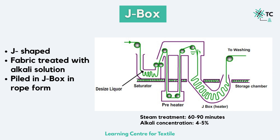The next machine is the J-box, which is J-shaped — hence the name. Before the fabric enters the J-box, it is treated with the alkali solution, passed in rope form, and piled up inside the J-box. It is then treated with steam for about 60 to 90 minutes. Here the concentration of alkali is high — around 4 to 5 percent — because the scouring time is low.